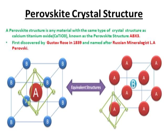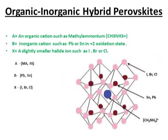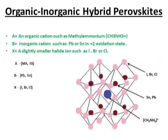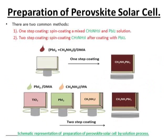The promising material used in making solar cells is the organic-inorganic hybrid perovskite. In this hybrid, A is an organic cation like the methylammonium cation; B is an inorganic cation like lead or tin, which must be in the +2 oxidation state; and X is a slightly smaller halide like iodine, bromine, or chlorine. The lead and halide units form octahedral units at the corners, and the organic cation sits at the body center. This material is made using a solution process.